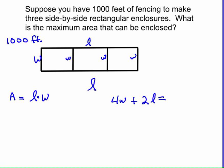Combined, the 4w + 2l has to equal 1,000. If you solve that equation for l, 2l equals 1,000 minus 4w. Dividing by two on each side, l would equal 500 minus 2w.